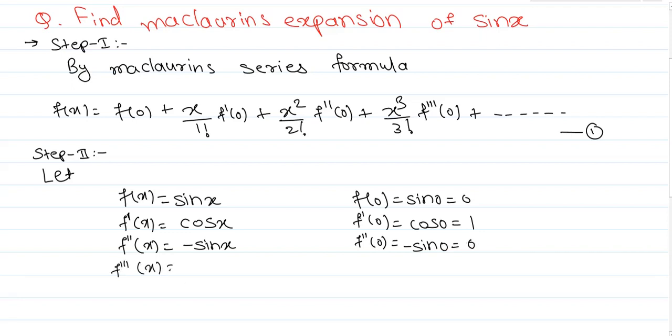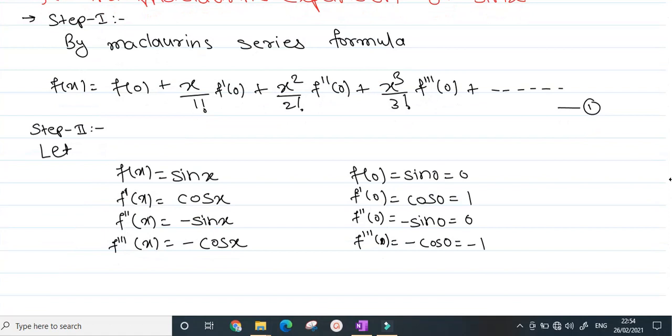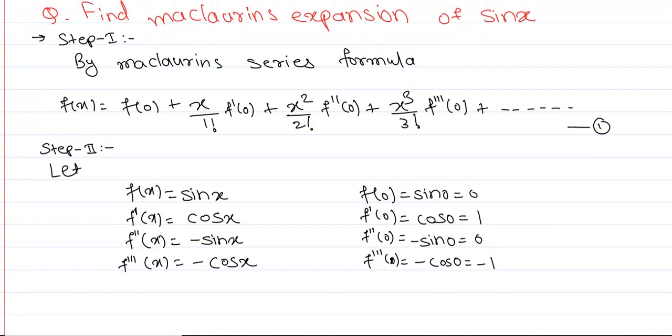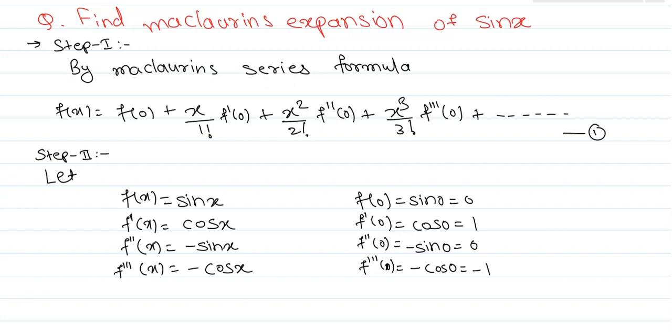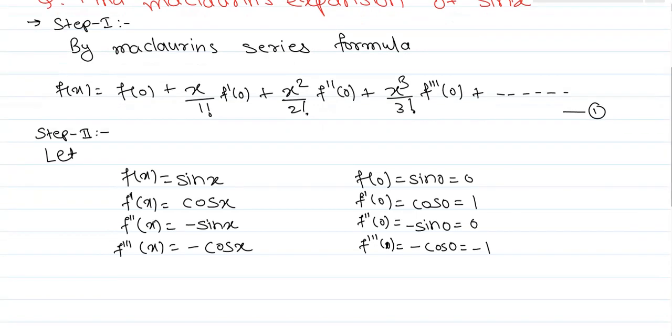f'''(x) is -cos x, so f'''(0) = -cos 0 = -1. Next, if we differentiate again we get the fourth derivative.